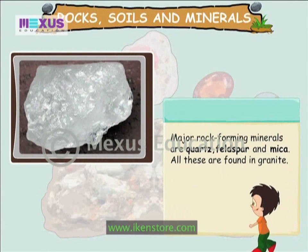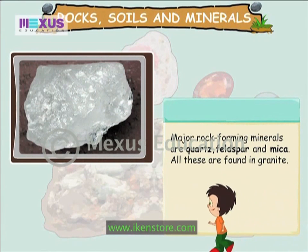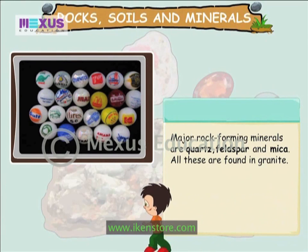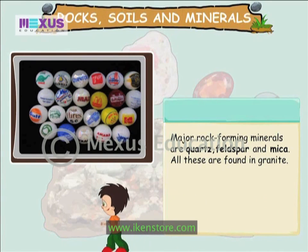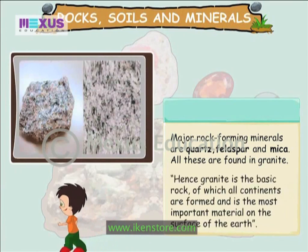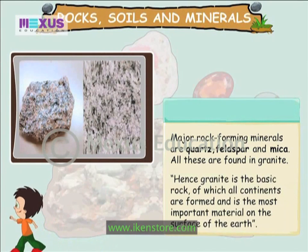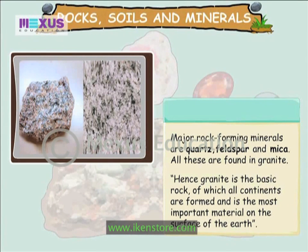Major rock-forming minerals are quartz, feldspar and mica. All these are found in granite. Hence, granite is the basic rock of which all continents are formed and is the most important material on the surface of the earth.